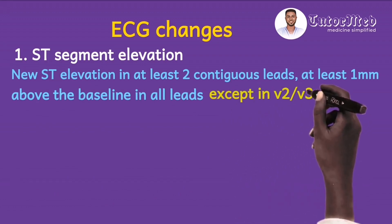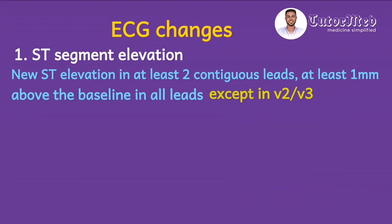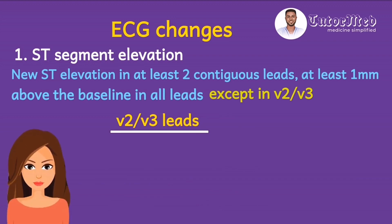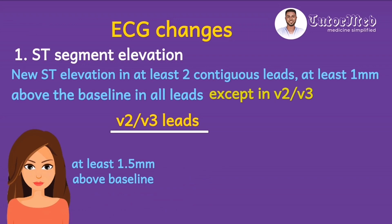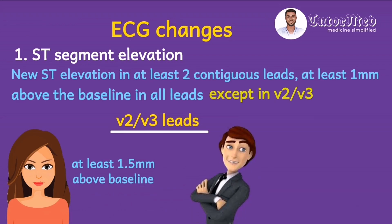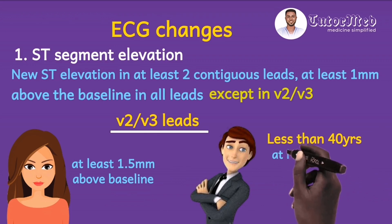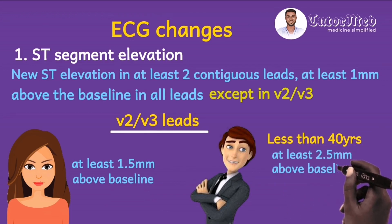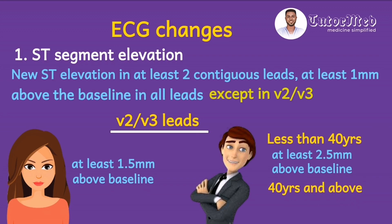However, there are exceptions in V2 and V3 — they don't follow the one millimeter rule. In women, the ST elevation in V2 and V3 must be at least 1.5 millimeters above the baseline. In men it depends on age: if he is less than 40 years old, it must be at least 2.5 millimeters above the baseline; if he is 40 years and above, the ST elevation must be at least 2 millimeters above the baseline.